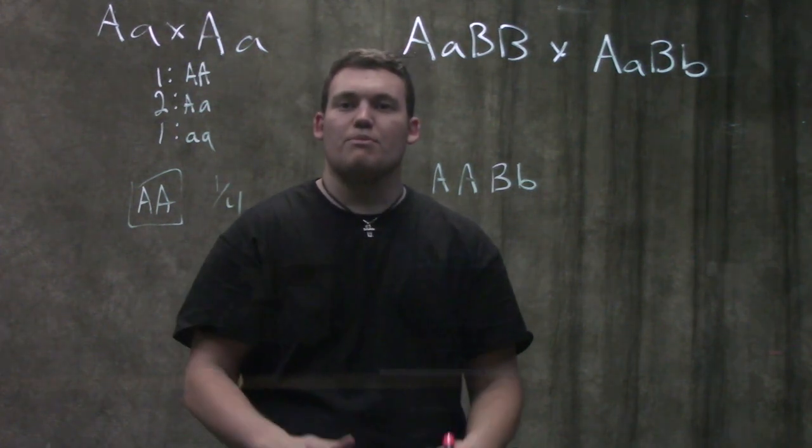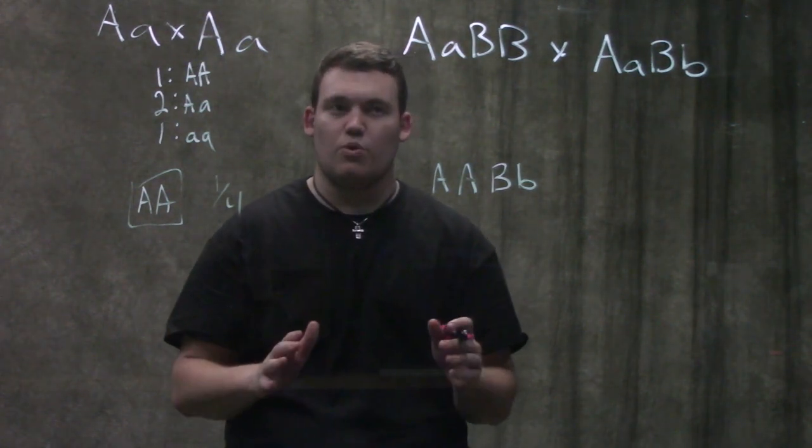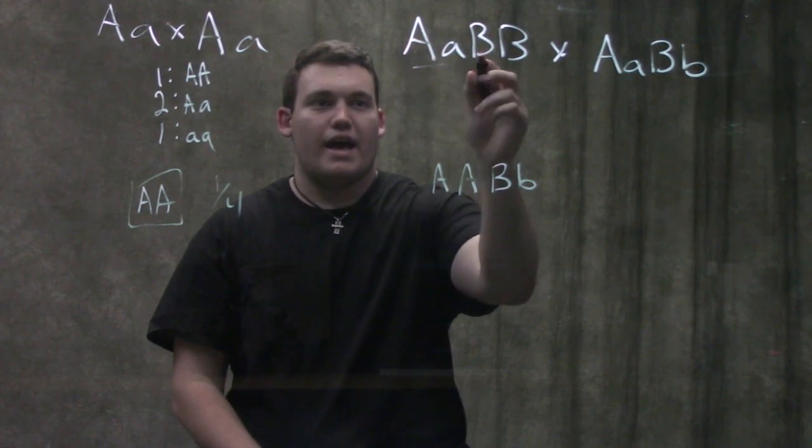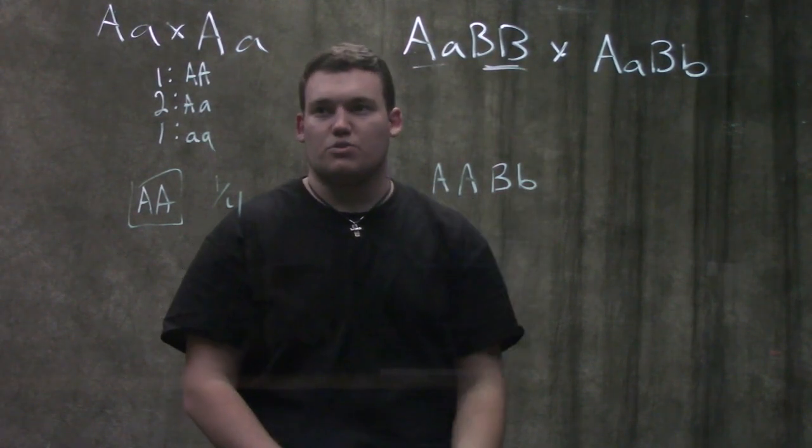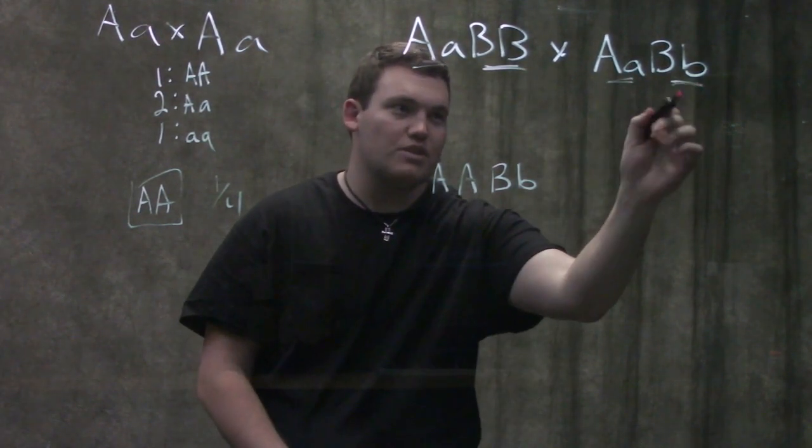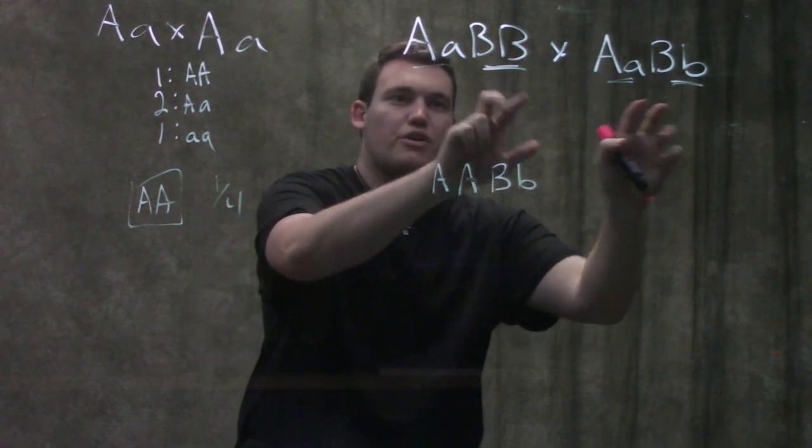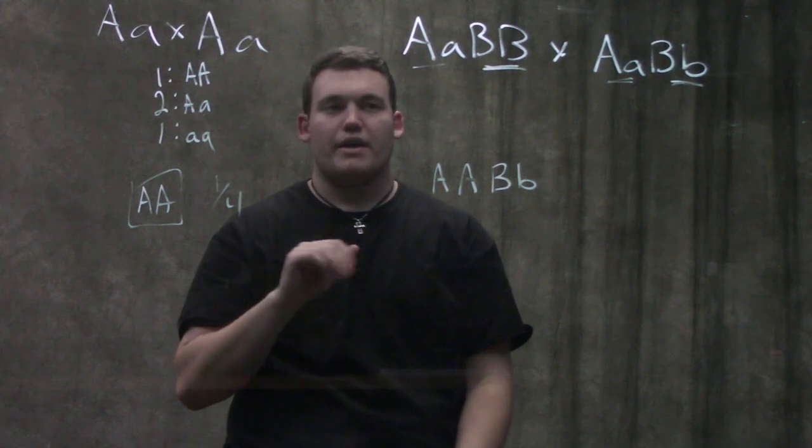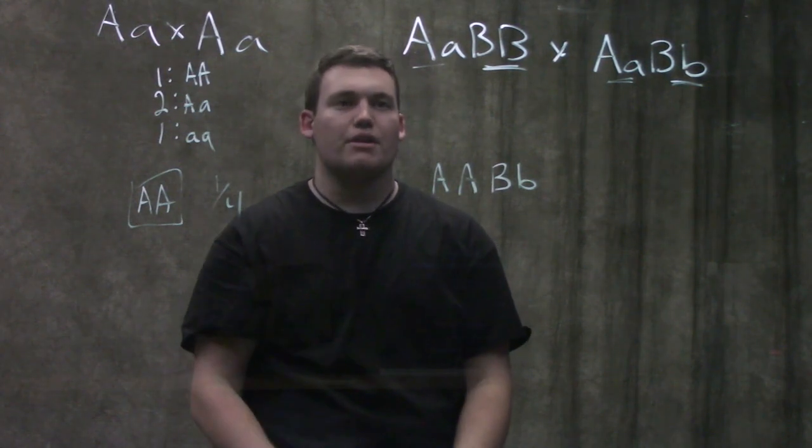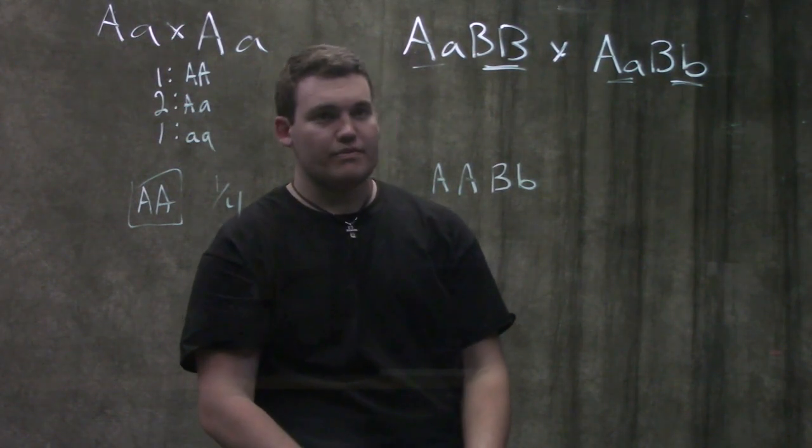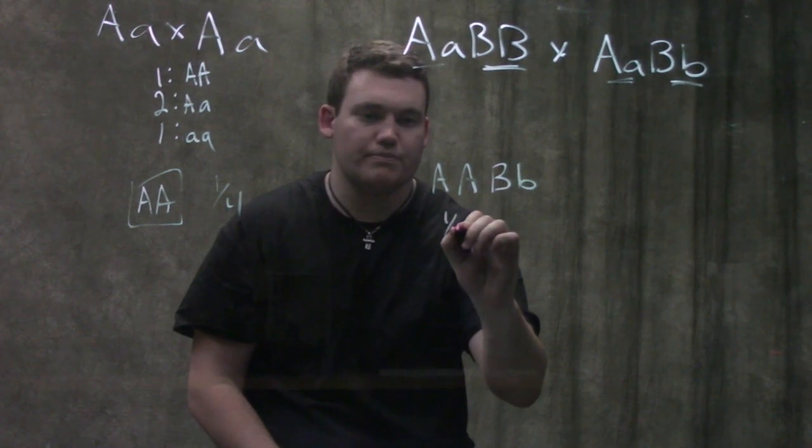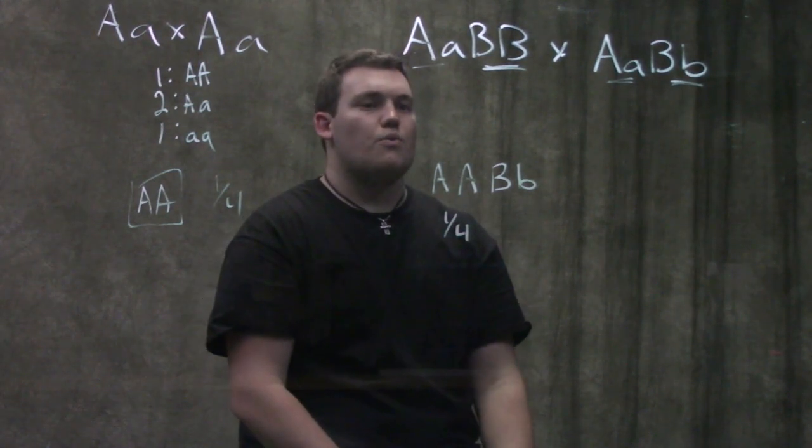And remember, because these independently assort, this one has absolutely nothing to do with this one. We're going to do this just like normal. We're going to cross our two A's and we're going to cross our two B's. So what I'm going to do is in my head, I'm going to look at this and I'm going to say, okay, we've got one quarter and one half.